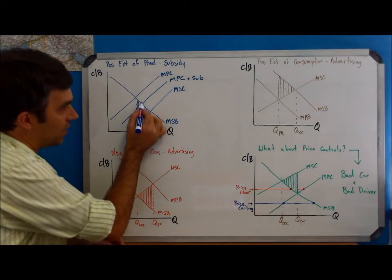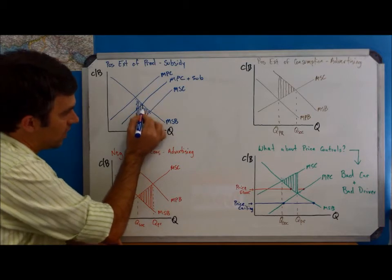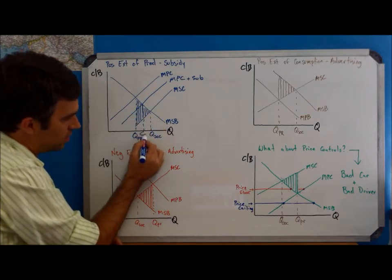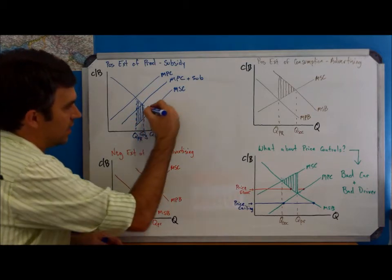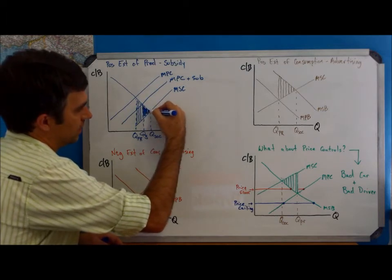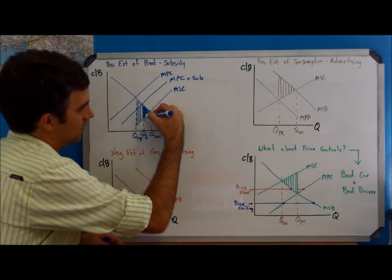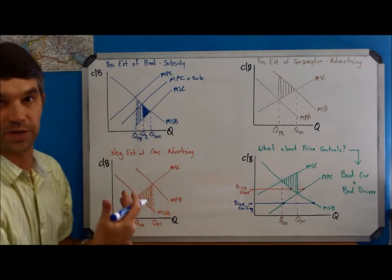Again here we can see, okay, well, here's the new level of consumption right here. We'll call that Q3 and what that means is the amount of our positive externality has been reduced.